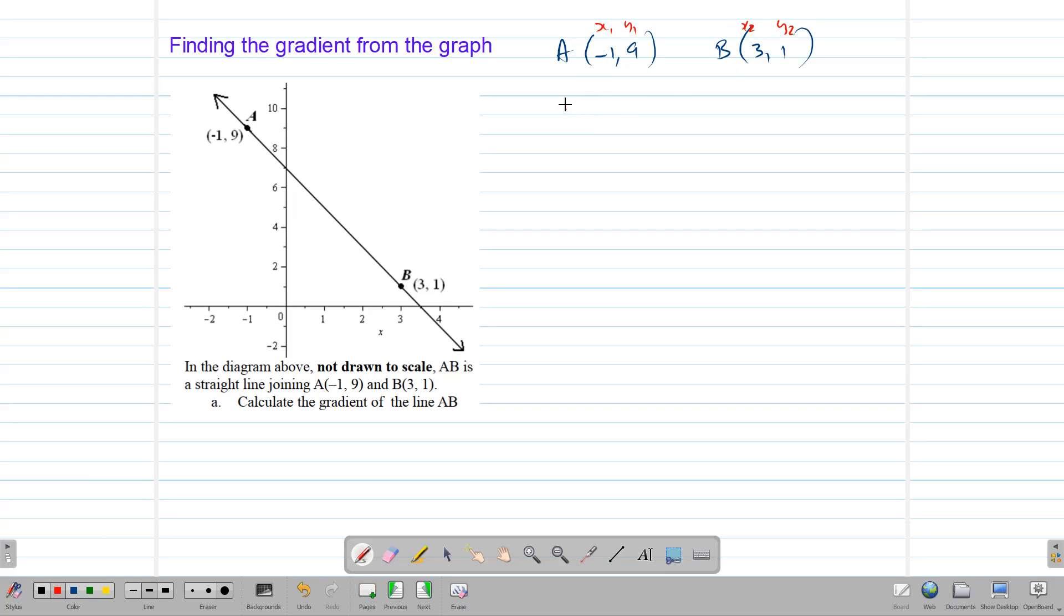Now, let's substitute this information into the formula. So 1, take away 9, over 3, take away negative 1, which gives us negative 8, over 4, which is actually negative 2. So this is our gradient. Now, if we didn't want to use the formula, and you wanted to use the rise over run idea to find your answer, then we can look at it by looking at this triangle here that is already drawn, and ask ourselves, what is our rise? What is our run? And do the division, rise over run.